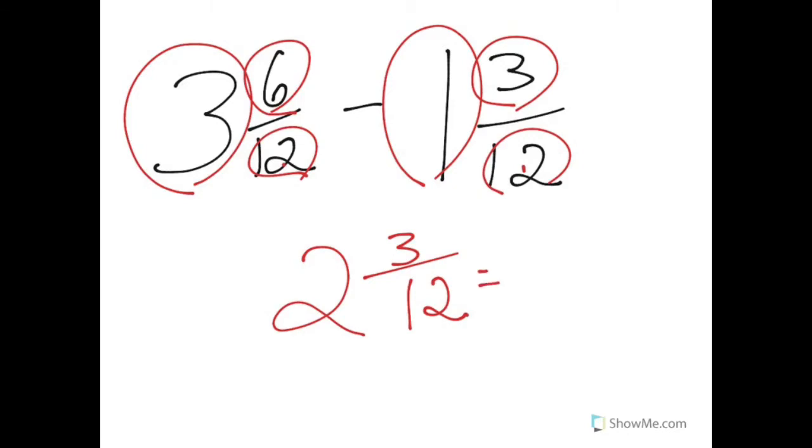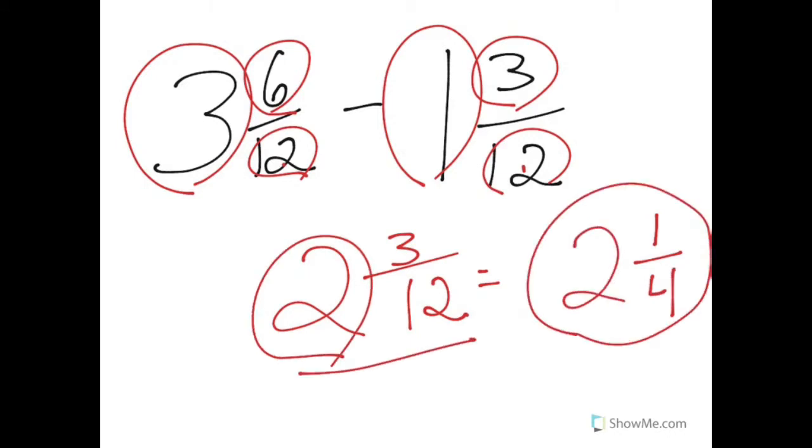2 and 3/12. Now you might look at 3/12 and say, well Mr. Quick, 3 and 12 are both divisible by 3. You're right, so we need to simplify. In which case 3/12 would simplify: 3 goes into 3 one time, 3 goes into 12 four times. My whole number stays the same, so 2 and 3/12 would give us 2 and 1/4 in simplest form.